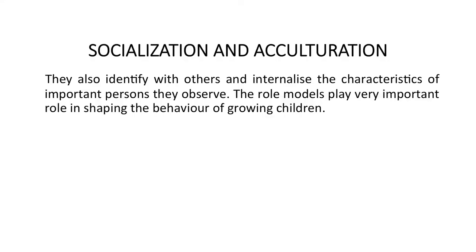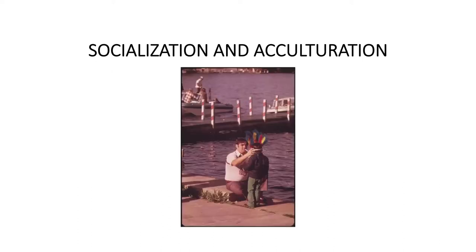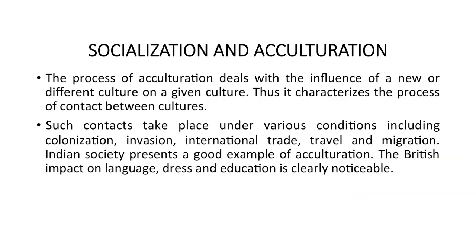It has been found that authoritarian and permissive parenting interferes with the healthy development of personality. Parents use reward and punishment to promote or discourage children's behavior. Children also learn by imitation and modeling significant others — they observe and try to adopt that behavior, for example of parents or teachers in their environment. They also identify with and internalize the characteristics of important persons around them. Role models play a very important role in shaping the behavior of growing children.